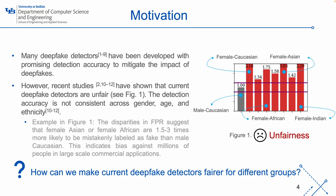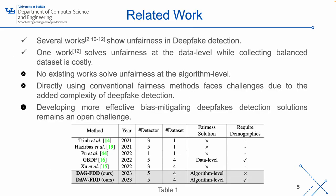So, how can we make current deepfake detectors fairer for different groups? Table 1 shows that several works have exposed the unfairness in deepfake detection. Among these, only one work attempted to solve this issue at the data level, assuming that the key reason for the unfairness is the imbalance of different demographic groups in the training data. They constructed a balanced training dataset where every demographic group has an equal number of training samples. However, collecting a larger balanced dataset can be costly and labor-intensive. No existing works solve unfairness in deepfake detection at the algorithm level, and using conventional fairness methods directly faces challenges due to the added complexity of deepfake detection.